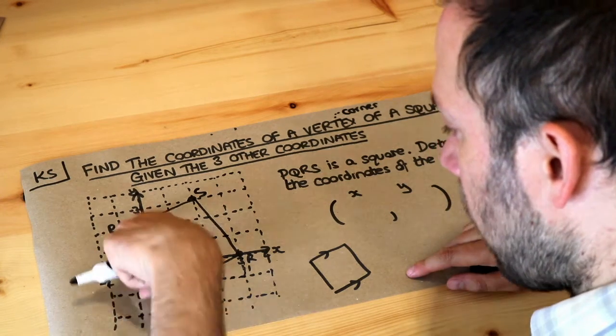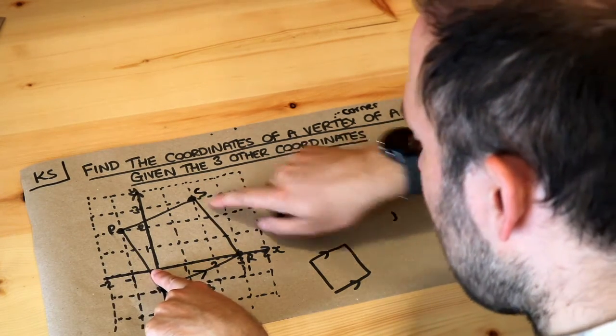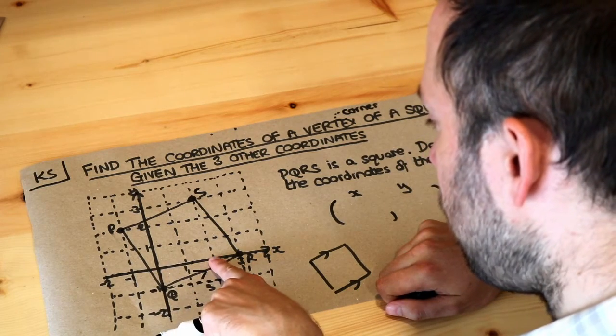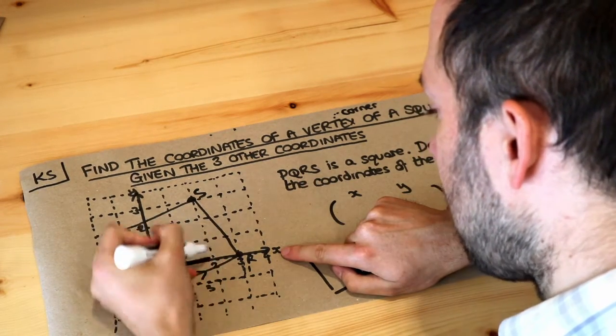the point zero, zero, where these two lines cross. And to get to S, we can see that it's two on the X axis. So it's two to here.